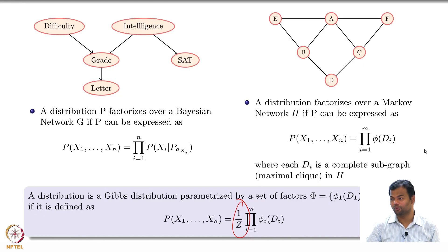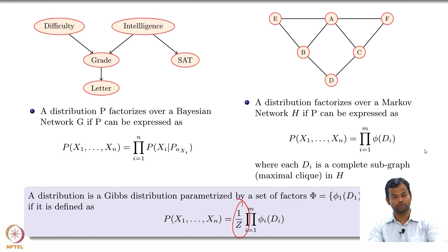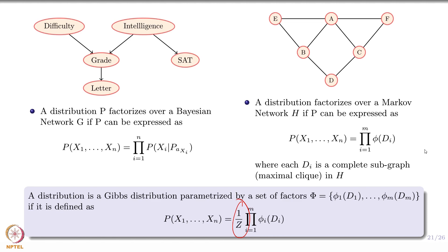Just a quick recap of what we have been discussing. We have been talking about graphical models, both directed and undirected, driven by the primary goal of understanding joint distributions of a large number of random variables. In the discrete case, this is intractable because you end up with an exponential number of parameters in your distribution, making it impossible to specify those.